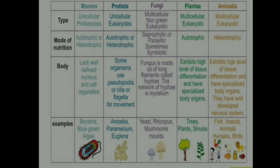Next, Fungi are multicellular, non-green eukaryotes that are saprophytic or parasitic, and sometimes symbiotic. Fungi are made up of long filaments called hyphae; the network of hyphae is called mycelium. Examples include yeast, mushrooms, and molds.